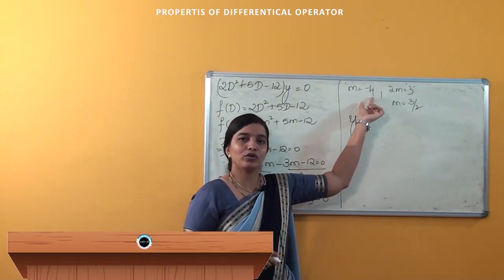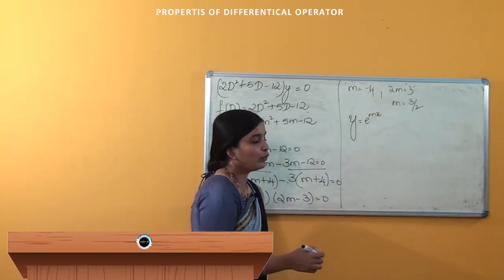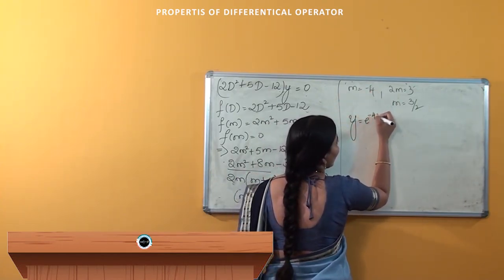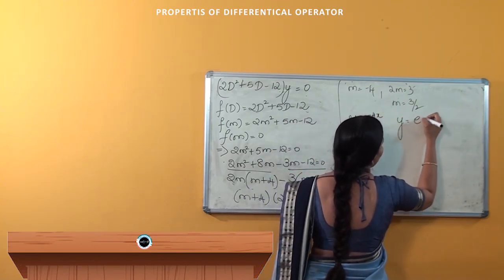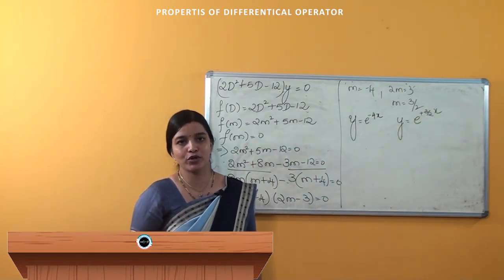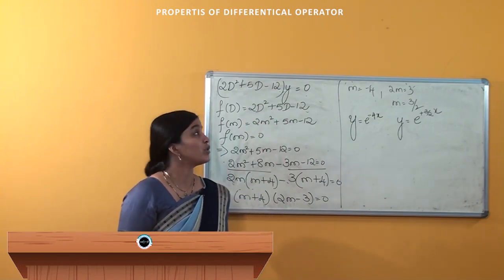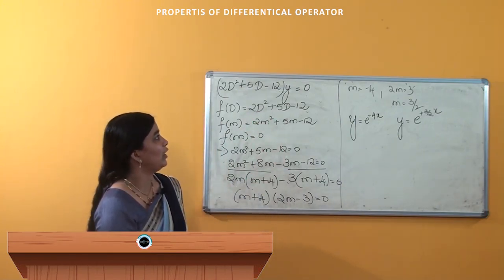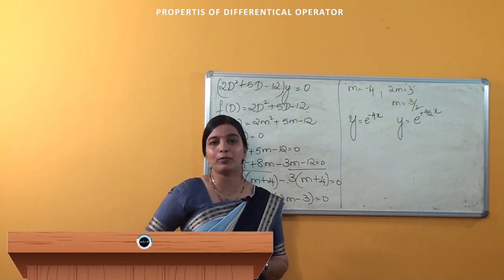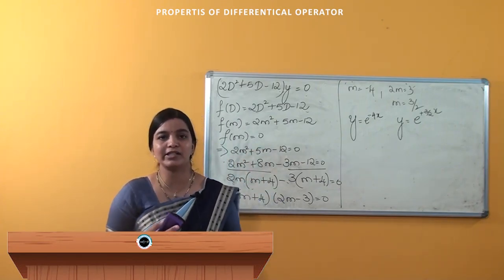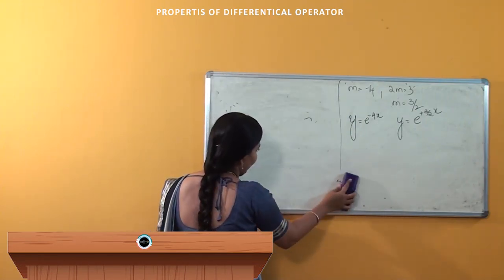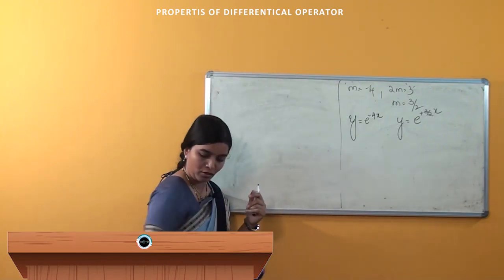Here there are 2 roots: one is -4 and another is 3/2. So the solution is y = e^(-4x) and y = e^(3x/2). These are the 2 solutions of the given equation (2D² + 5D - 12)·y = 0. Now we have seen the first property of this differential operator; we will see the second property.